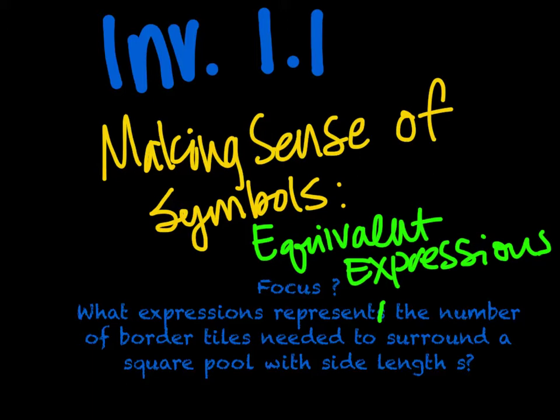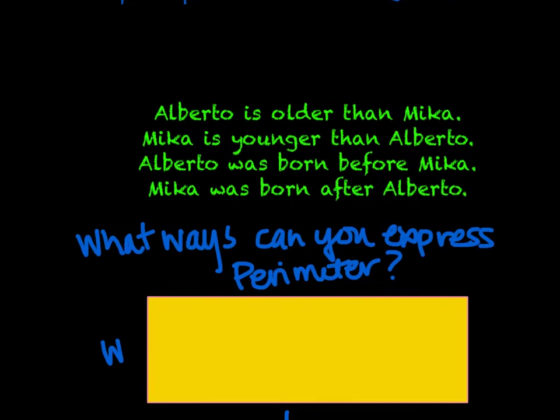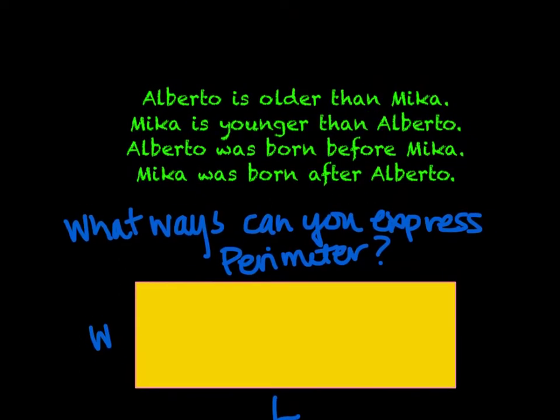We're going to be using variables that represent a variety of different numbers, and using those variables we are going to be playing around with different concepts. The concept of an equivalent expression is essentially being able to express something one way, but also being able to look at it in a different manner.